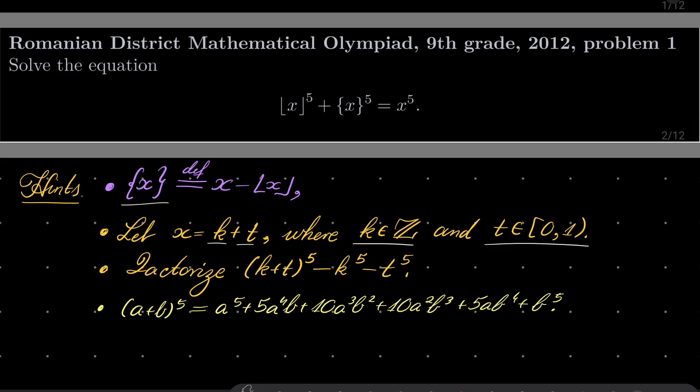Express our equation in terms of k and t and factorize. Put everything on one side and factorize this expression. Also this formula may be useful, derived from the 6th row of Pascal's triangle: a plus b to the 5th power factorizes or expands in this way written here. So give this problem a try and I will see you in just a minute.